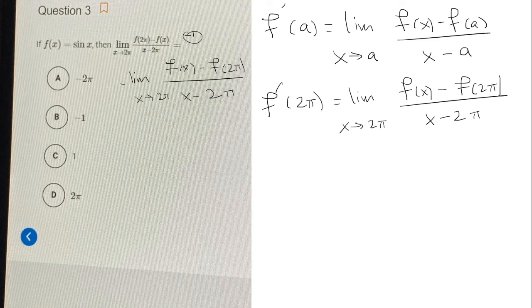So the negative 1 will just change the order of this. So instead of having positive f of 2 pi, we'll be subtracting it. And instead of subtracting f of x, we'll be adding it. So then this will just be the negative f prime of a, which a we said is 2 pi.